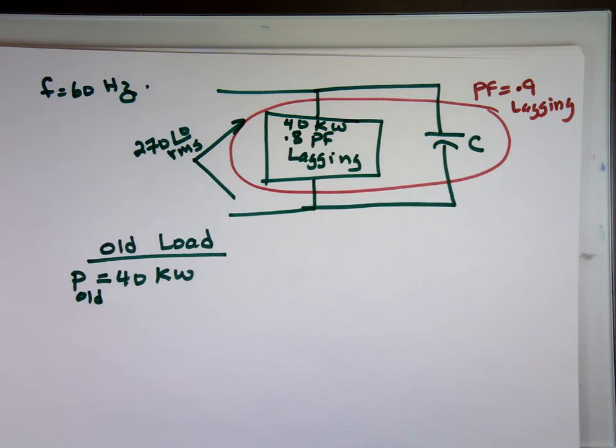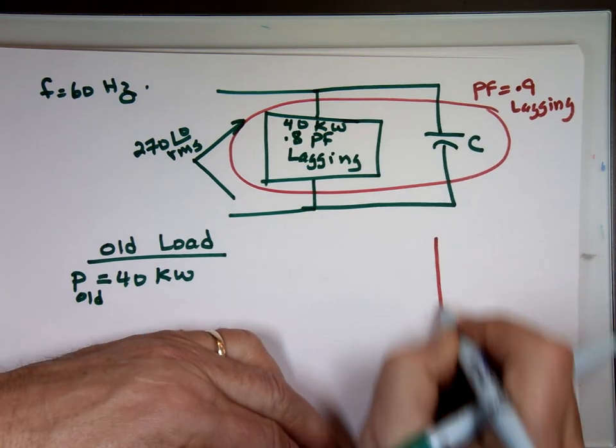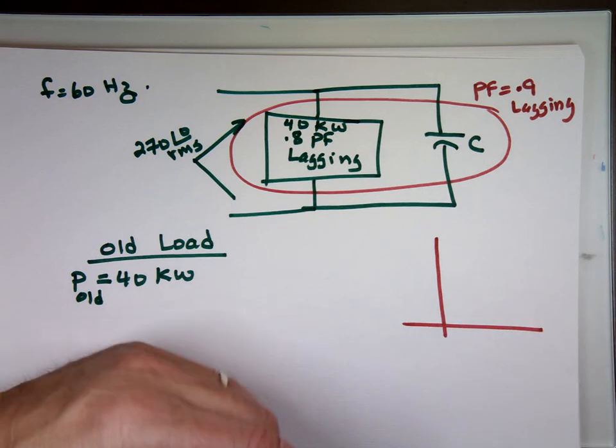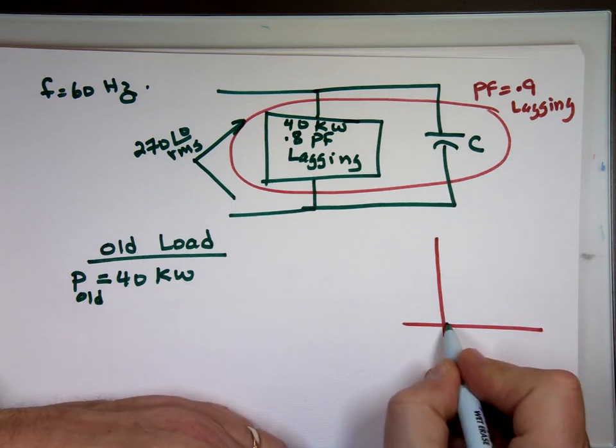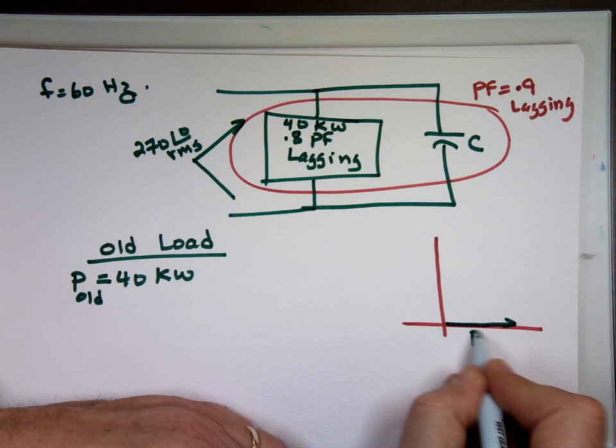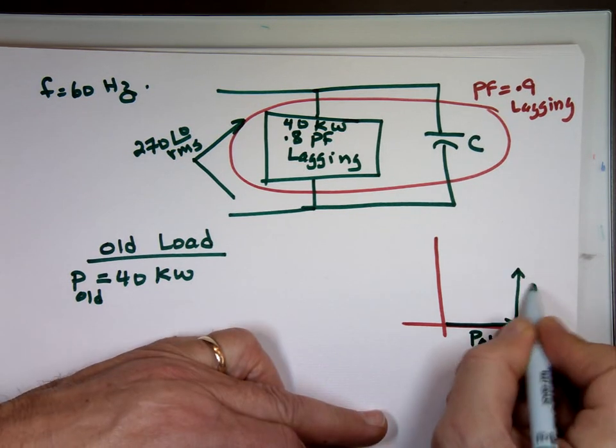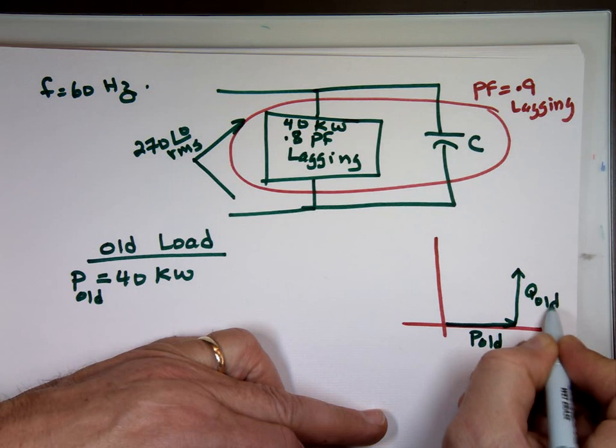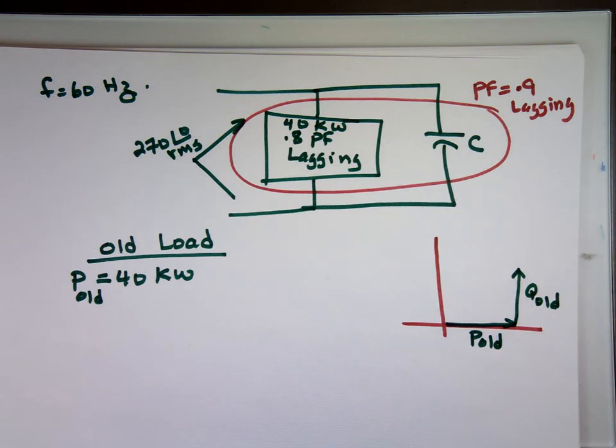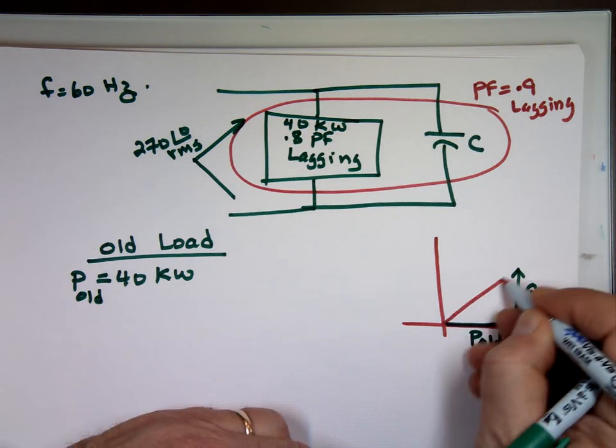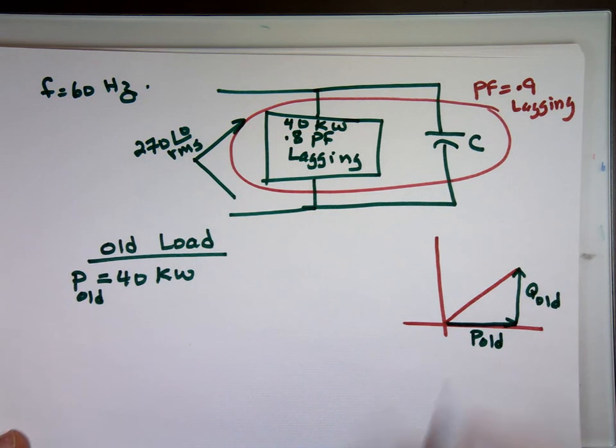So that's really P old. So if you're looking at it, picture-wise, this is the old power. This is P old. This is Q old. We know this angle here. Can we figure out what that angle? What's this angle? Inverse cosine of 0.8.